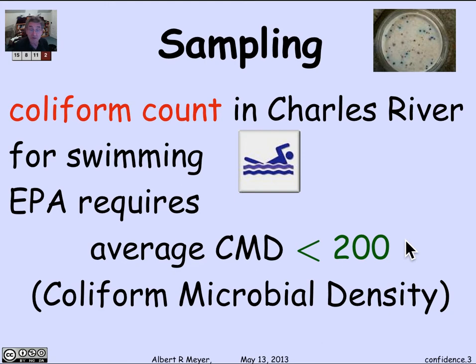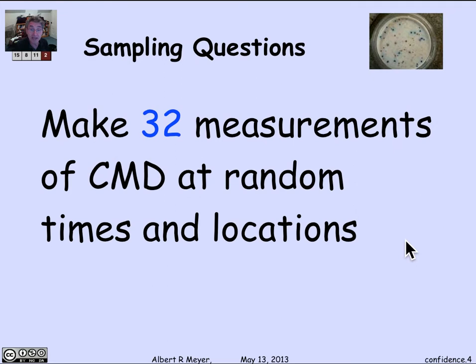What we want to do is figure out whether when we do a sample of CMDs around the river and get some numbers out, we can conclude that the average CMD is less than 200. We need to convince the EPA of that.